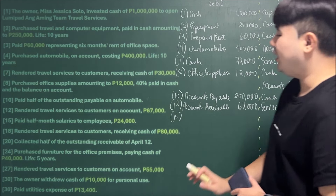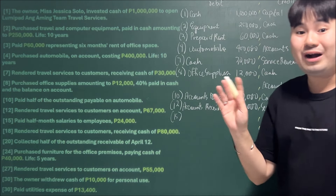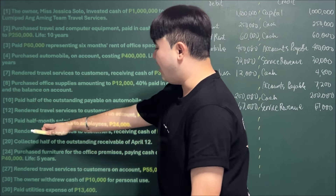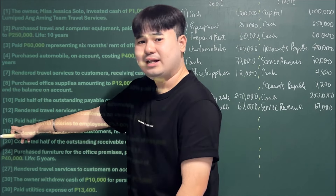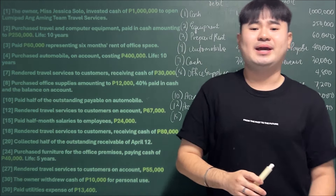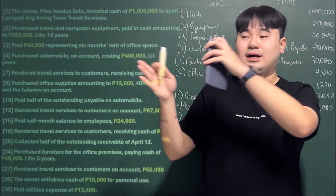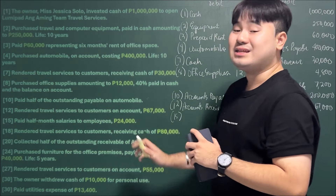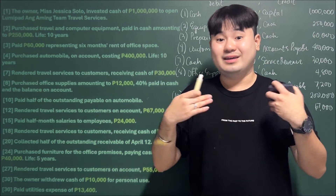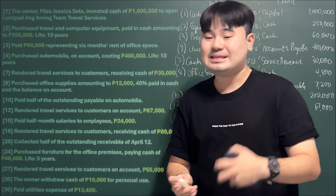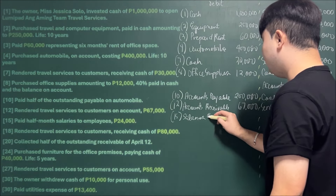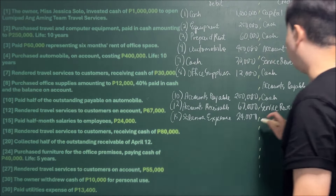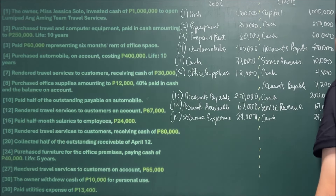April 15: Paid half-month salaries to employees of 24,000. This means salaries for April 1–15 (the quincena). This is an expense, so we debit Salaries Expense for 24,000. Since it was paid in cash, we credit Cash for 24,000.